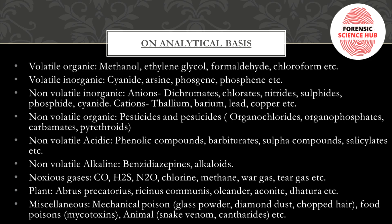Non-volatile organic poisons include pesticides and insecticides like organochlorides, organophosphates, carbamates, and pyrethroids — these are discussed separately in the pesticide and insecticide playlist. Non-volatile acidic poisons include phenolic compounds, barbiturates, sulfa compounds, and salicylates. Non-volatile alkaline or basic poisons include alkaloids and benzodiazepines.